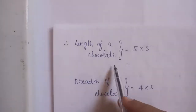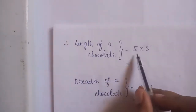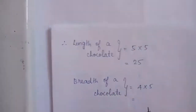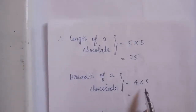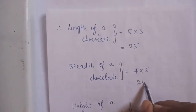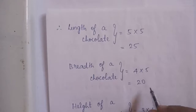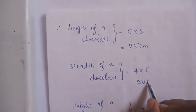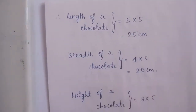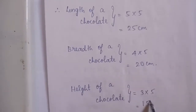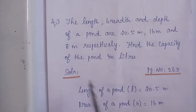Therefore, the length of the chocolate is 5x = 5 into 5 = 25 cm. The breadth of the chocolate is 4x = 4 into 5 = 20 cm. And the height of the chocolate is 3x = 3 into 5 = 15 cm.